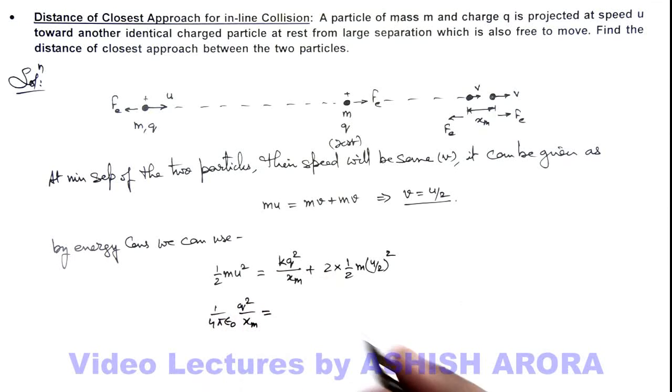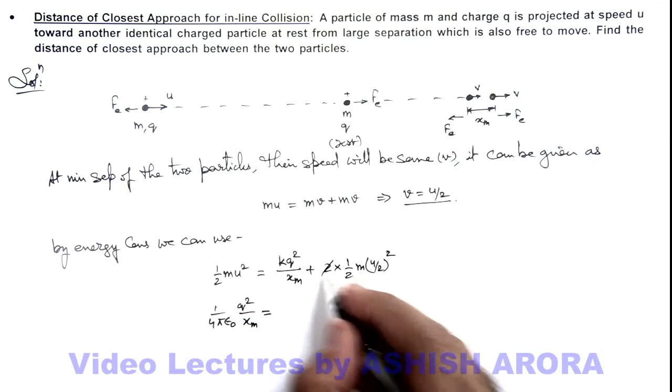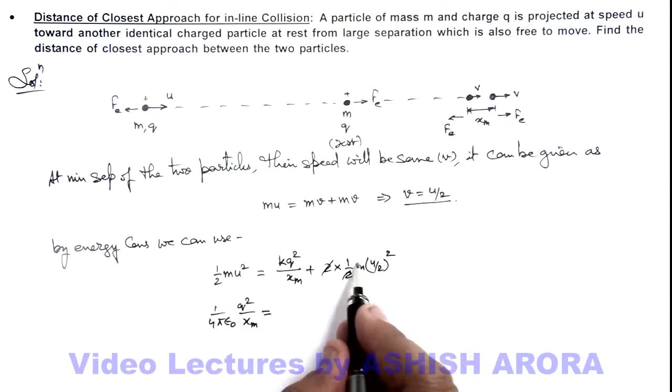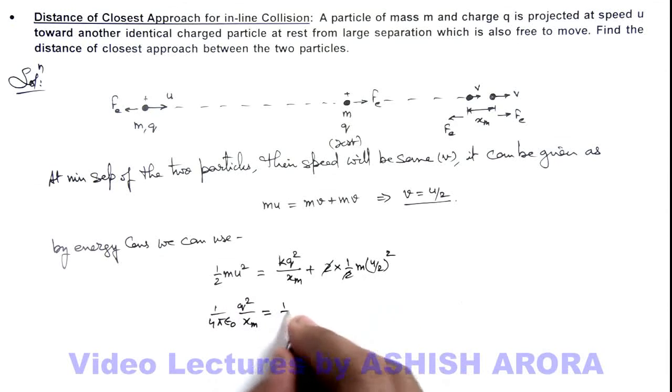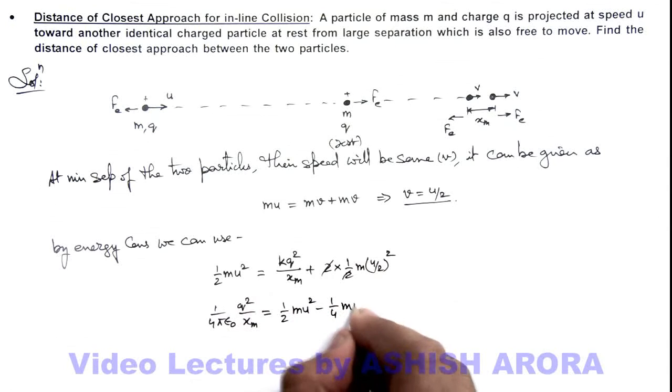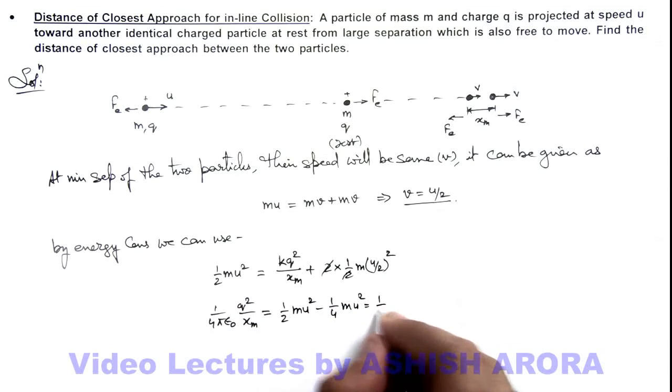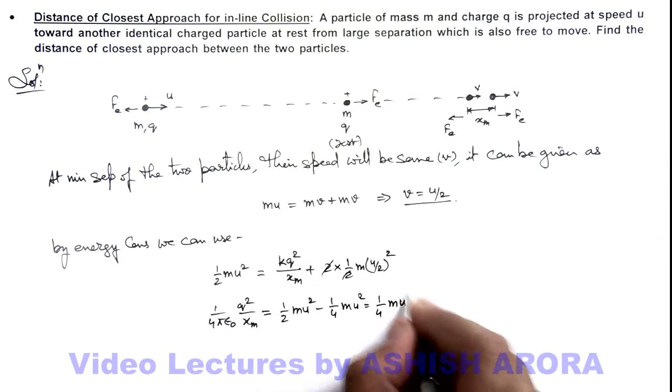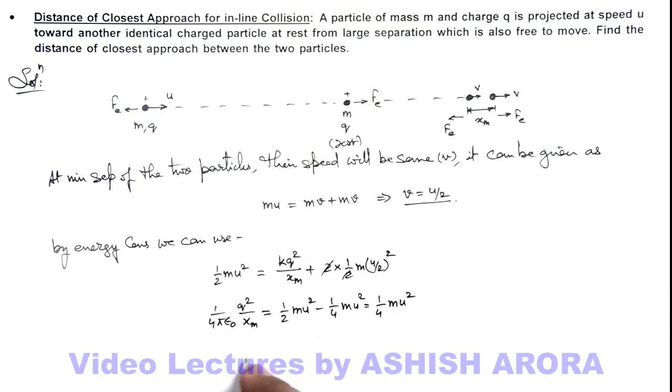This equals (1/2)mu² minus (1/4)mu². If I take this term on the left-hand side, it is (1/2)mu² minus (1/4)mu², which can be written as (1/4)mu².